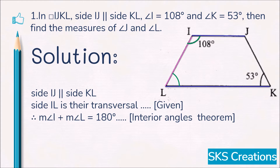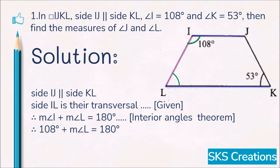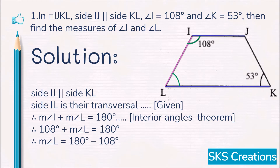Therefore, measure of angle I plus measure of angle L equals 180 degrees. Measure of angle I is given as 108 degrees, so we replace it: 108 plus measure of angle L equals 180 degrees. Shifting 108 to the other side, the sign changes from positive to negative, so measure of angle L equals 180 minus 108 degrees. Therefore, measure of angle L equals 72 degrees.